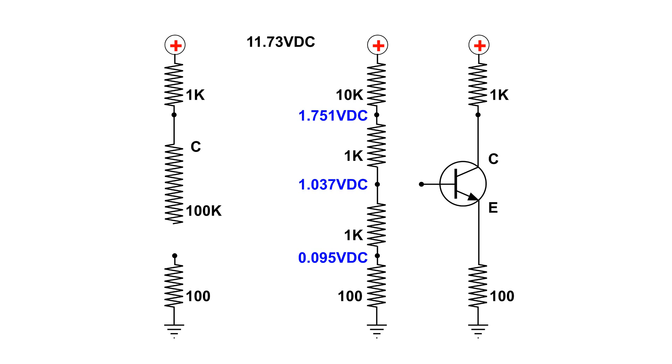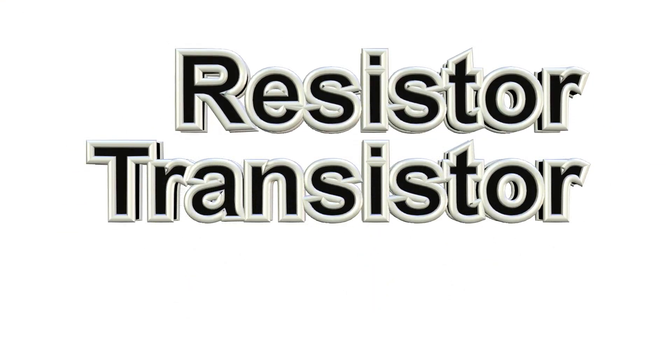What I'm going to do is adjust the variable resistor to match the voltage at the collector of the NPN transistor. And there is a reason why resistor and transistor are similar in spelling.